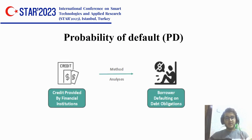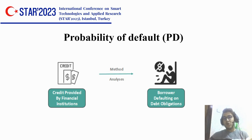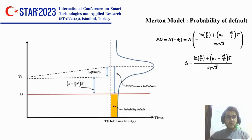First, probability of default (PD) is a measure of the likelihood that a borrower or counterparty will be unable to meet its payment obligations according to the agreed terms. To compute PD, we use the Merton model, also known as the Merton structural model.